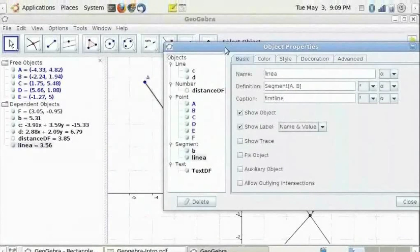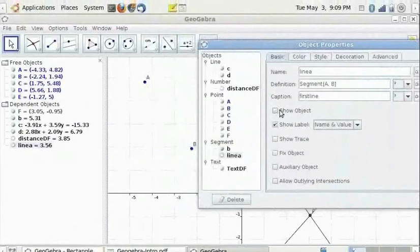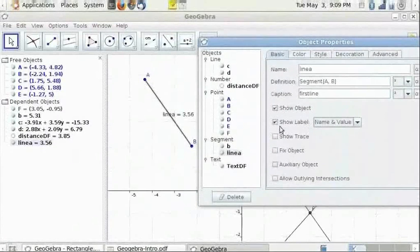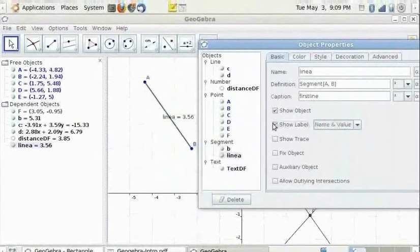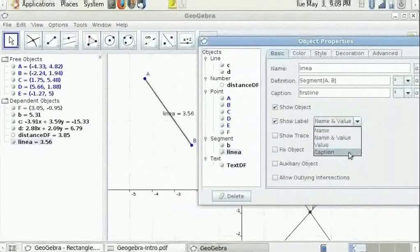You can choose to show the object or not show it. You can choose to not show the label or you can show one of these options. Let's keep the caption on.